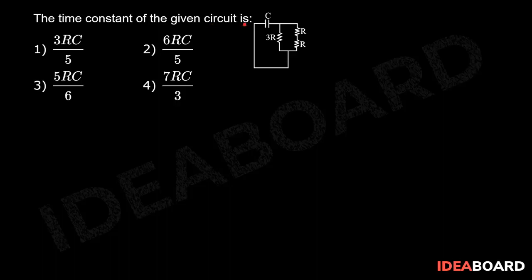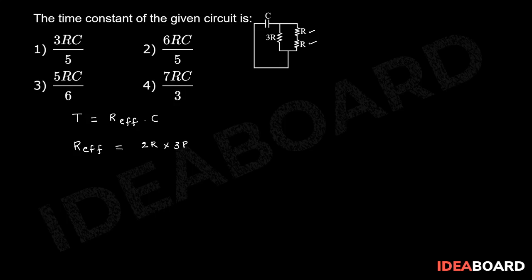The time constant of the given circuit is — so generally, the expression for time constant T is equal to R_effective into C. The effective resistance R_effective: the series resistances are 2R, 2R, and 3R in parallel, giving 2R into 3R divided by 2R plus 3R, which equals 6R squared by 5R, that is 6R by 5.